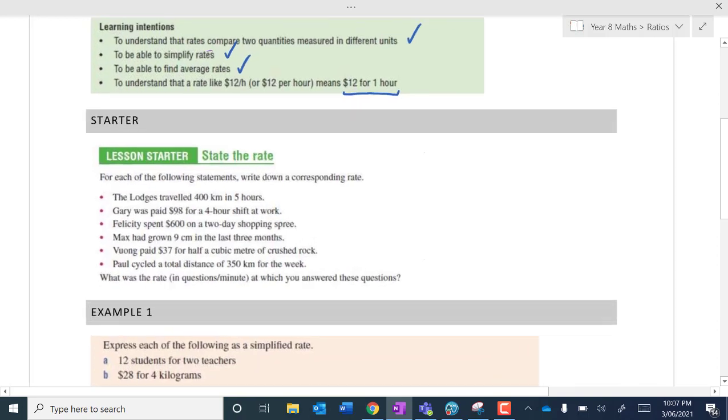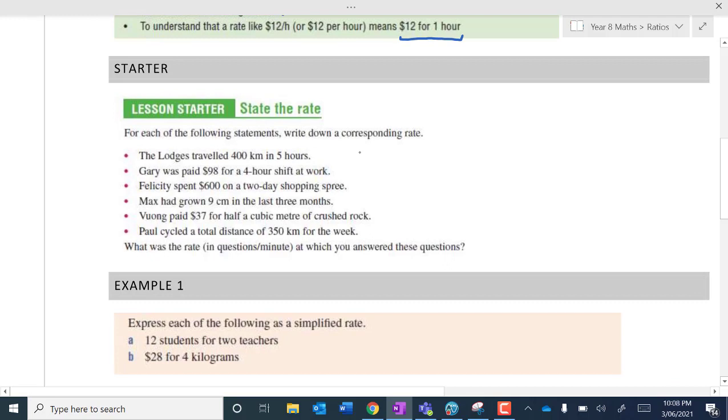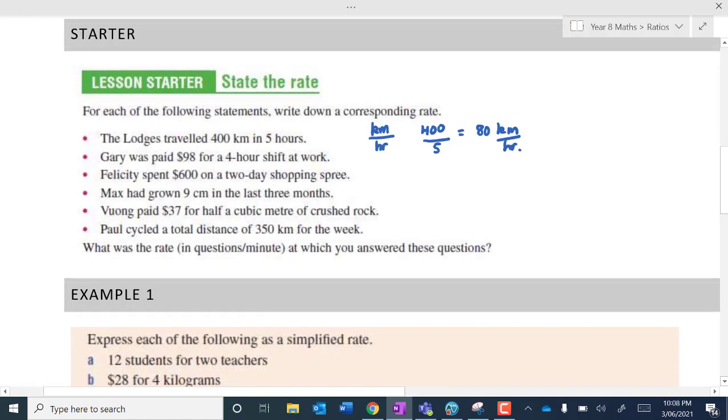So let's have a quick look at some rates and let's state the rate. For example, if the Lodges travelled 400 kilometres in 5 hours, then we have kilometres per hour. Now of course if I was to travel 400 kilometres in 5 hours then we would have a rate of 80 kilometres per hour. And I think that's a rate that we could all relate with, the speed limit being 100 kilometres per hour or something is of course a rate. So that's probably the most common one, your rate of speed. So kilometres distance per unit time.